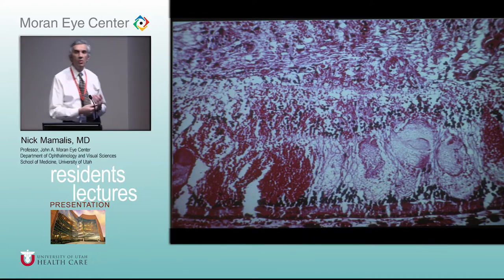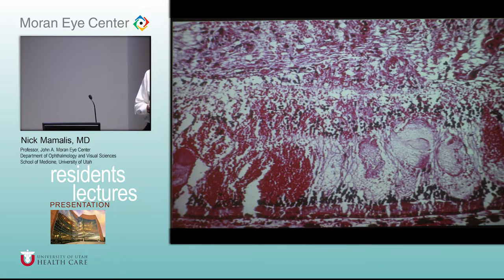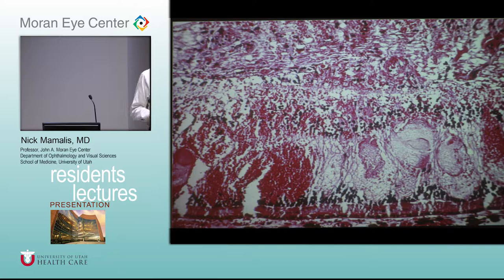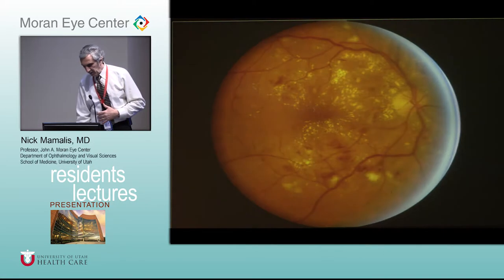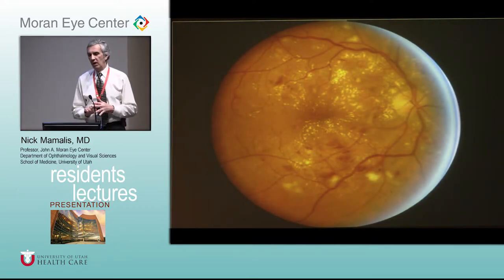Central retinal vein occlusion can cause a lot of damage. What else do you worry about — besides acute damage — in a central retinal vein occlusion, say several months out? Ischemia — so you can get chronic ischemia, which produces factors like VEGF that make abnormal blood vessels grow. When you get a central vein occlusion that is ischemic, the most common place you get neovascularization is the iris. You can get neovascularization of the iris leading to secondary neovascular glaucoma.